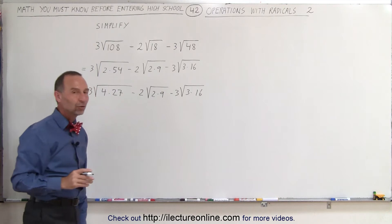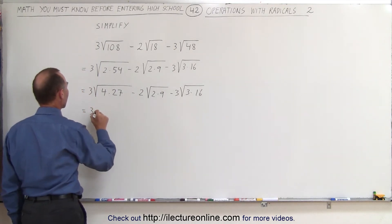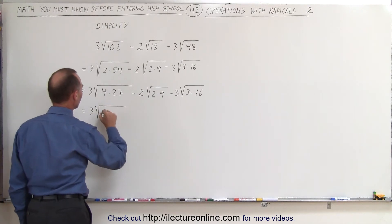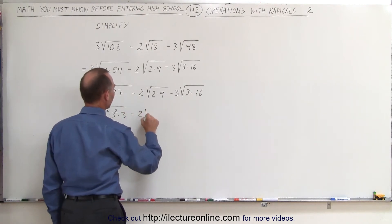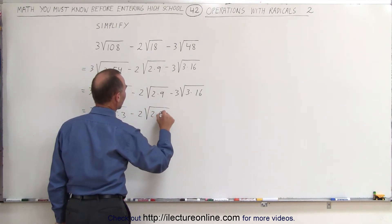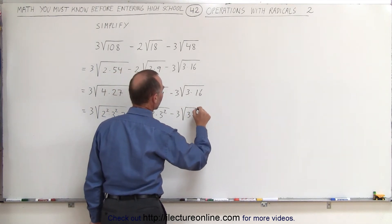Now we're ready to simplify this a little bit more. So this can be written as 3 times the square root of 2 squared times 3 squared times 3, minus 2 times the square root of 2 times 3 squared, minus 3 times the square root of 3 times 4 squared.